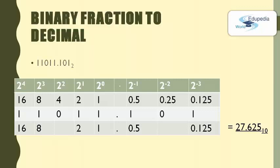In the second row it shows the value of the first row: 2 to the power of minus 1 is 0.5, 2 to the power of minus 2 is 0.25, and 2 to the power of minus 3 is 0.125. The third row shows the fractional binary digits. The fourth row shows the multiplication: 0.5×1=0.5, 0.25×0=0, 0.125×1=0.125. Summing the fractional part gives 0.625, so the overall number is 27.625 in decimal.